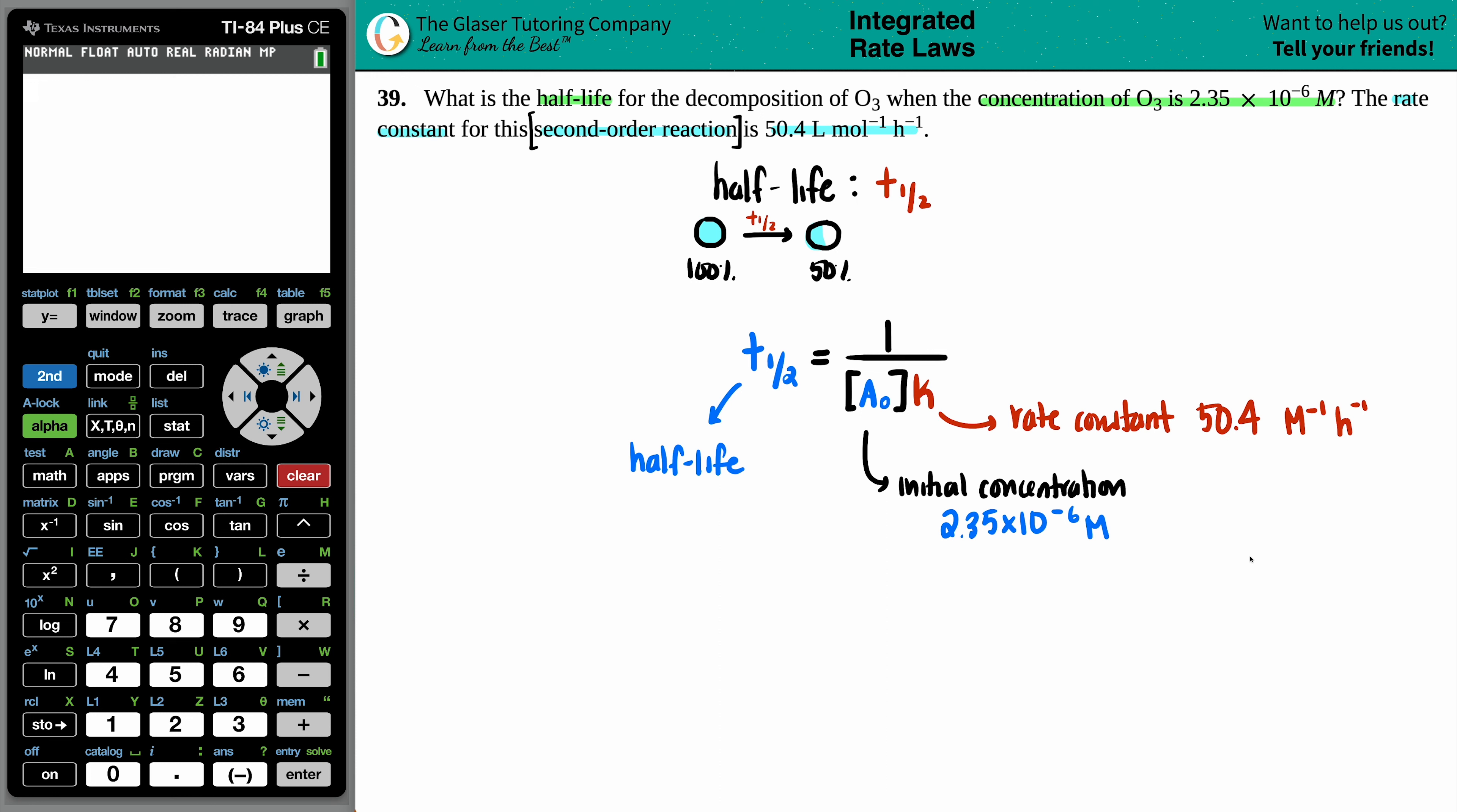So now we got everything. Let's solve for the half-life. T half equals 1 divided by those two values. So let's say we got 2.35 times, oh boy. Let's maybe make this a little bit bigger. 2.35 times 10 to the negative 6 times 50.4. I guess we'll do the denominator first. 1 divided by 2.35 times 10 to the negative 6. Yep, that number looks good. Times 50.4.